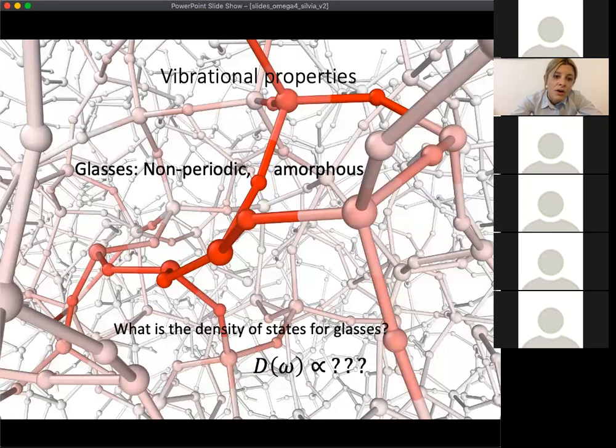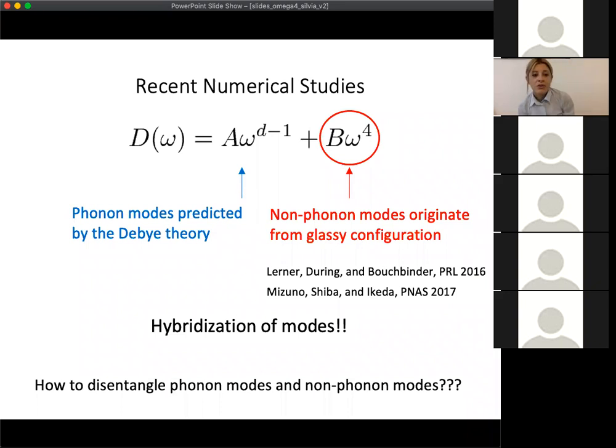For the density of states D(ω), which is proportional to ω^(d-1), where d is the spatial dimension. Assuming we have three-dimensional materials, atoms or molecules form spring bonds, and the density of states follows ω². Another important highlight is that these phonon modes are spatially extended modes.